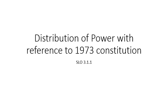Hello guys, today we are going to start our next chapter, that's chapter number three. In our first lesson of this chapter is the distribution of power with reference to the 1973 Constitution. We will discuss how the powers are distributed according to the 1973 Constitution. It's a federal Constitution, and by nature of a federal Constitution, powers are divided between center and provinces.